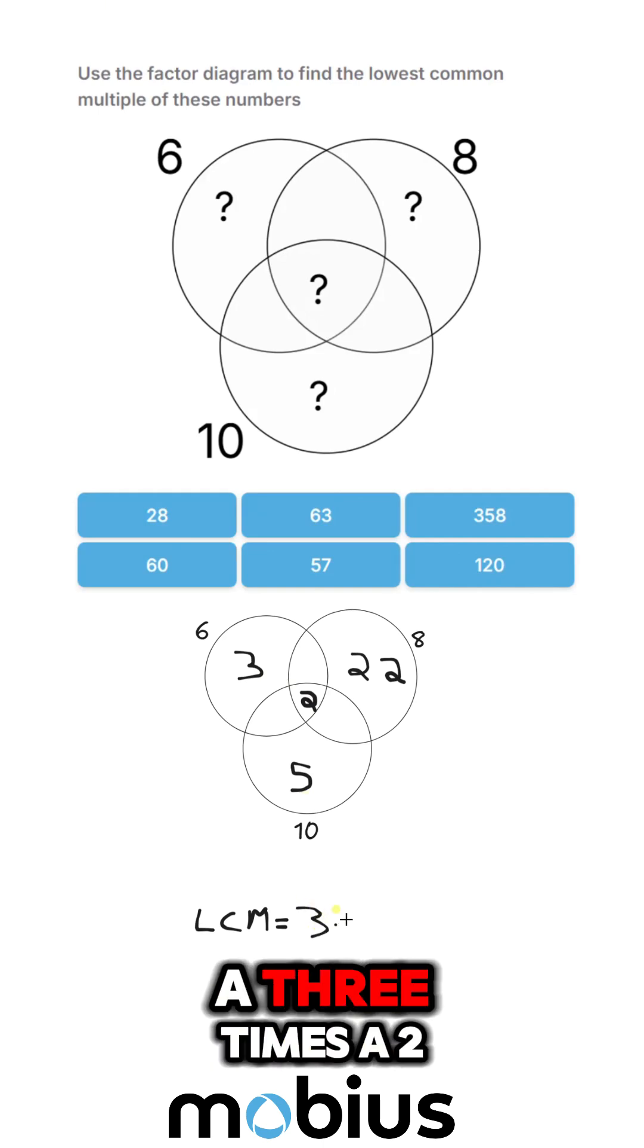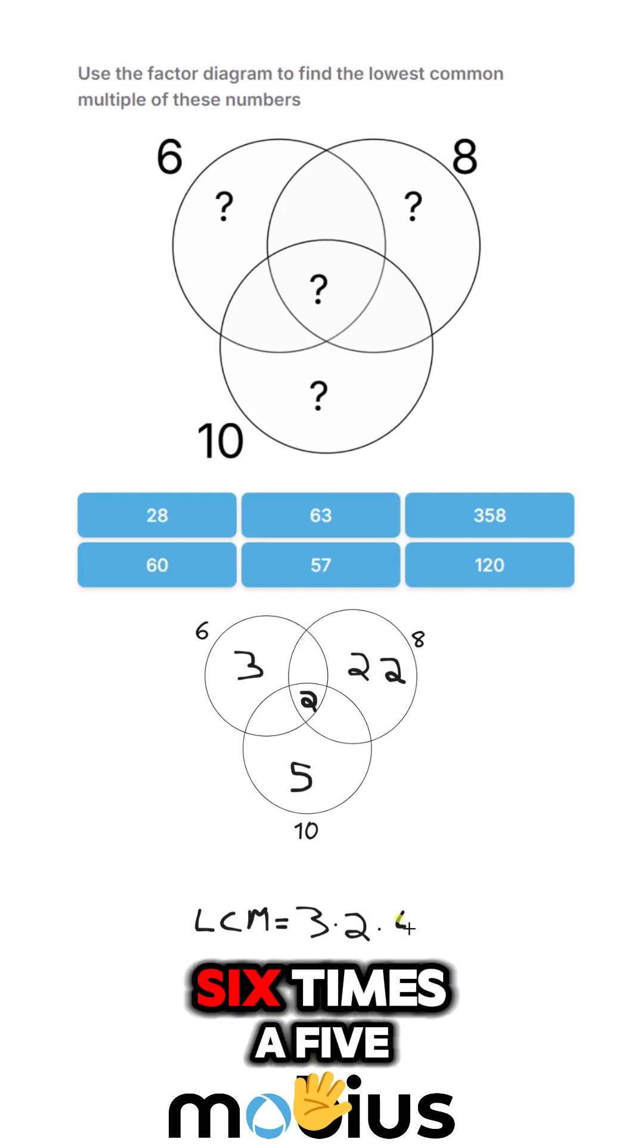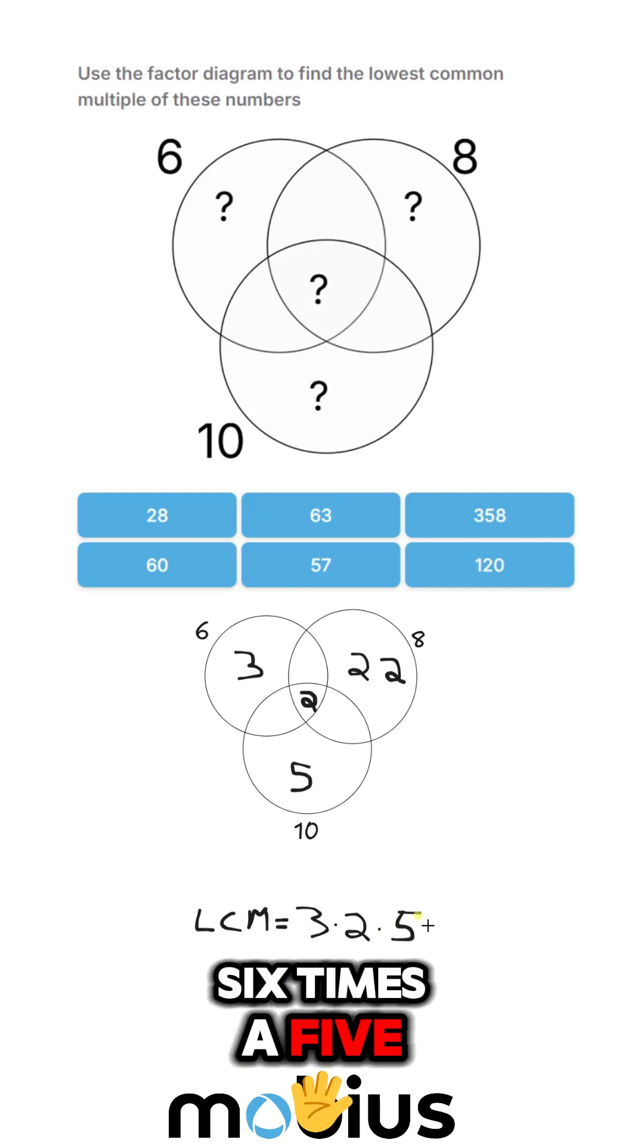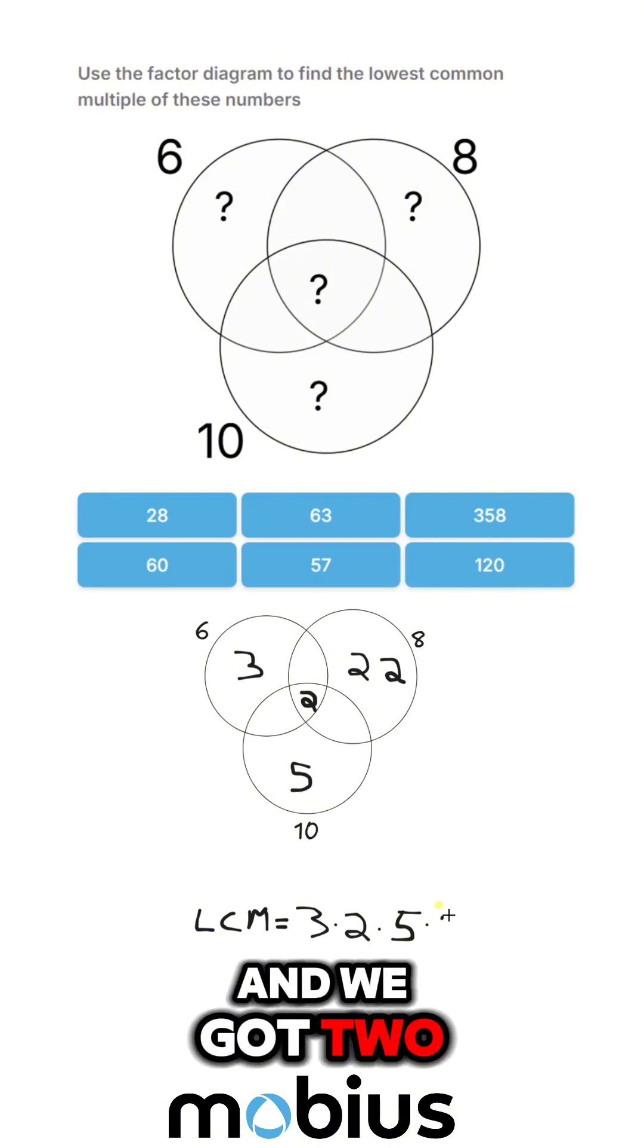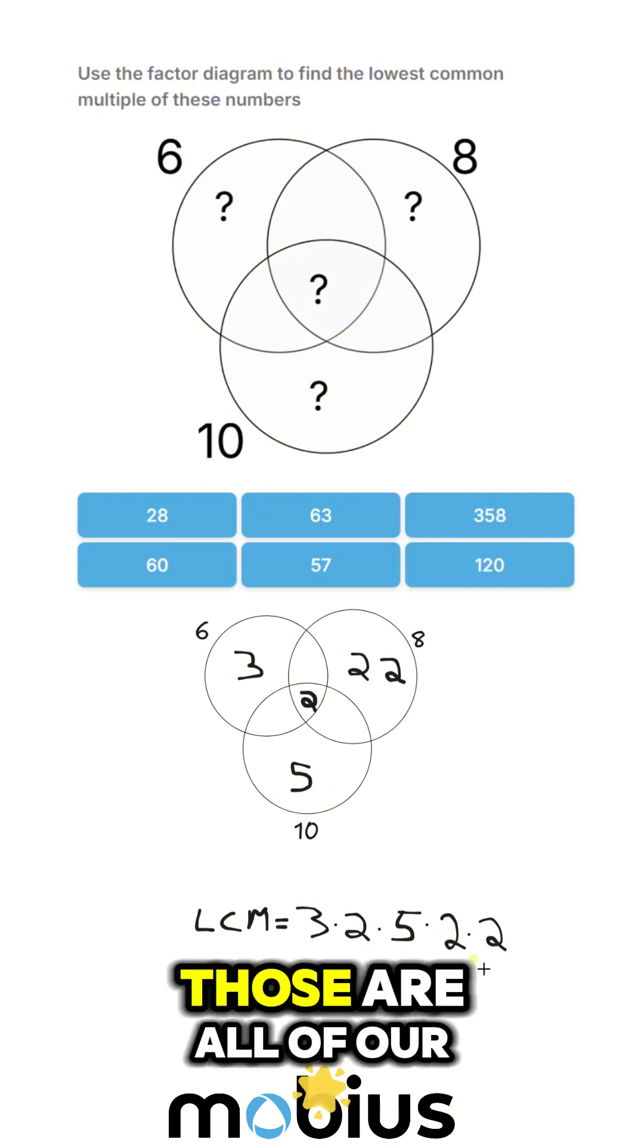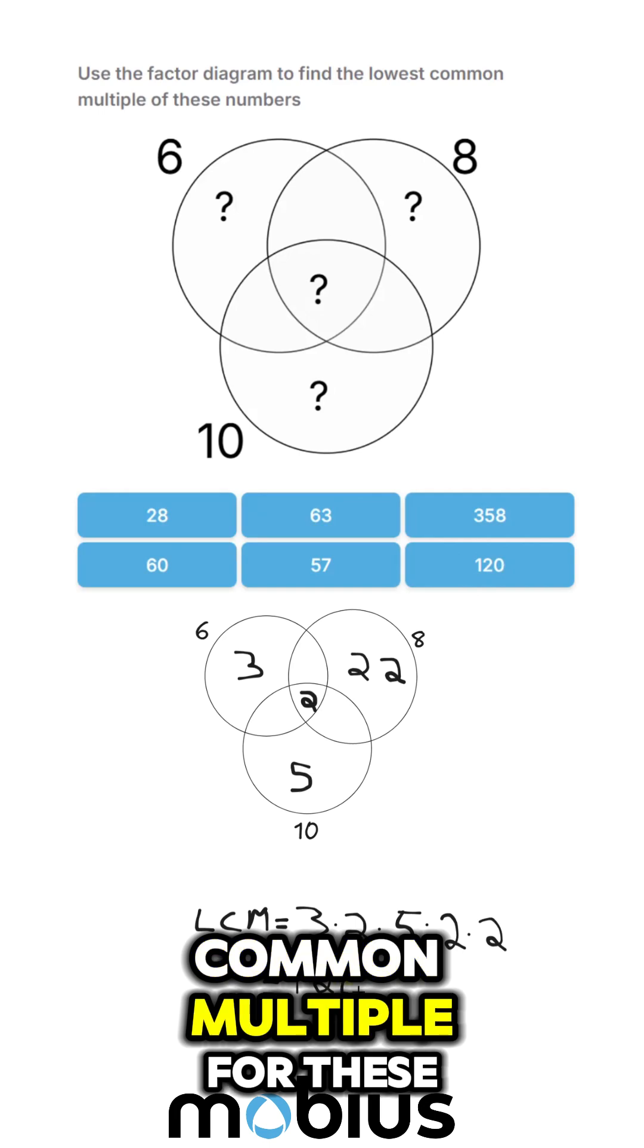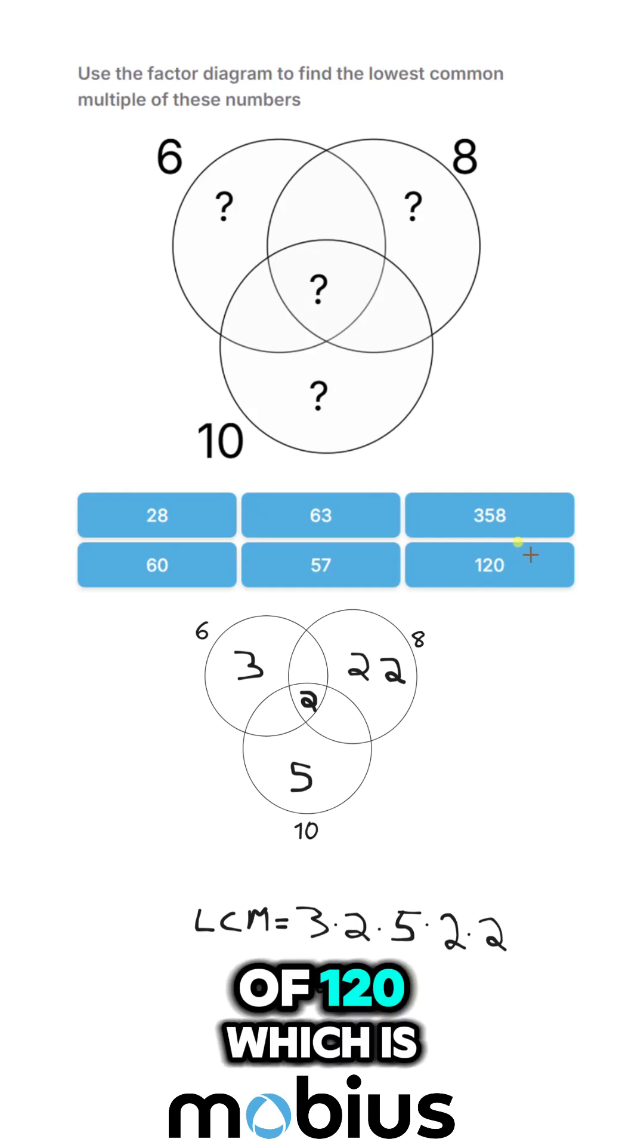So we've got a three times a two, takes care of the six, times a five, and we've got two remaining for the eight, two times two. So those are all of our distinct factors, and if we multiply those out, we get a lowest common multiple for these three numbers of 120, which is our answer right here.